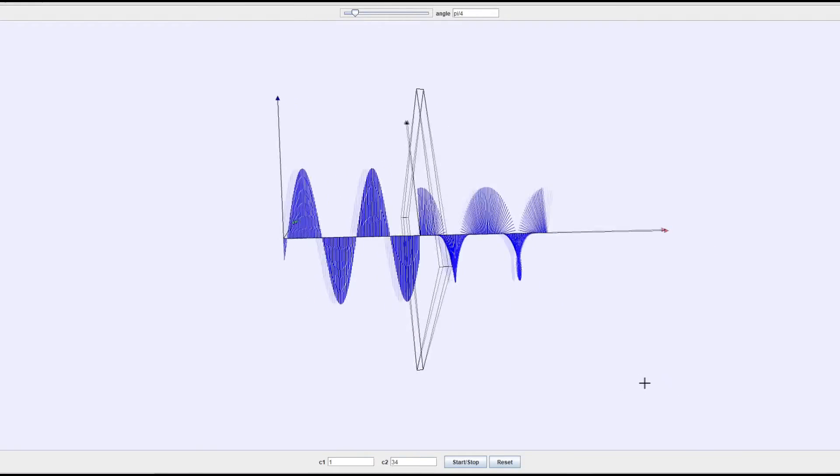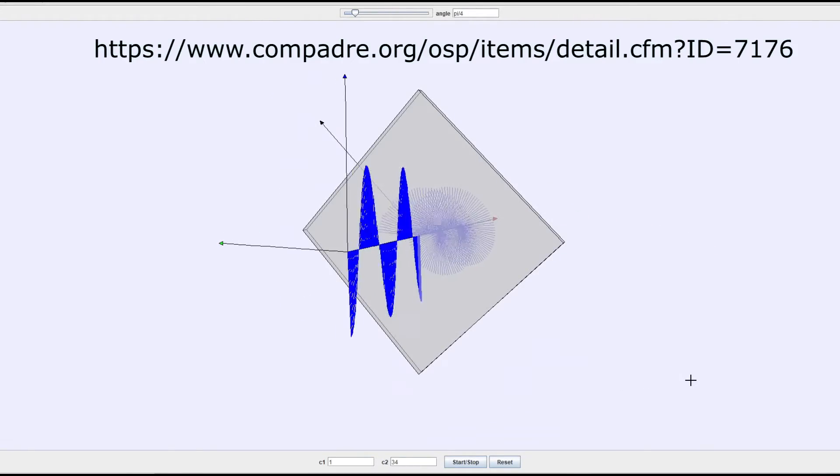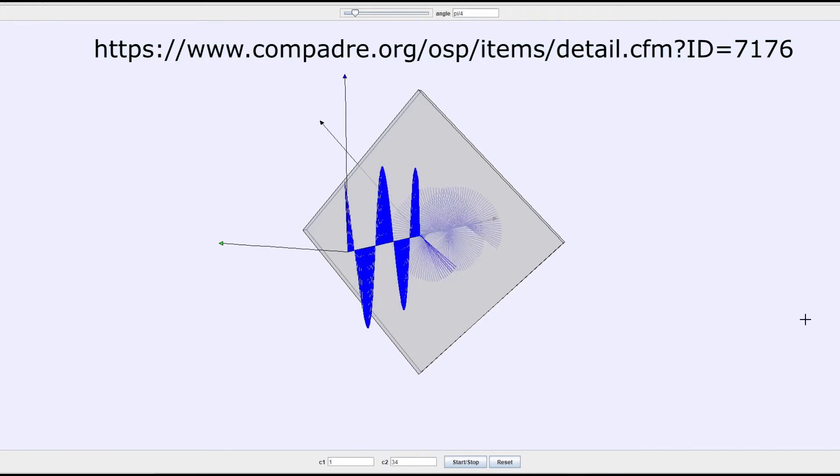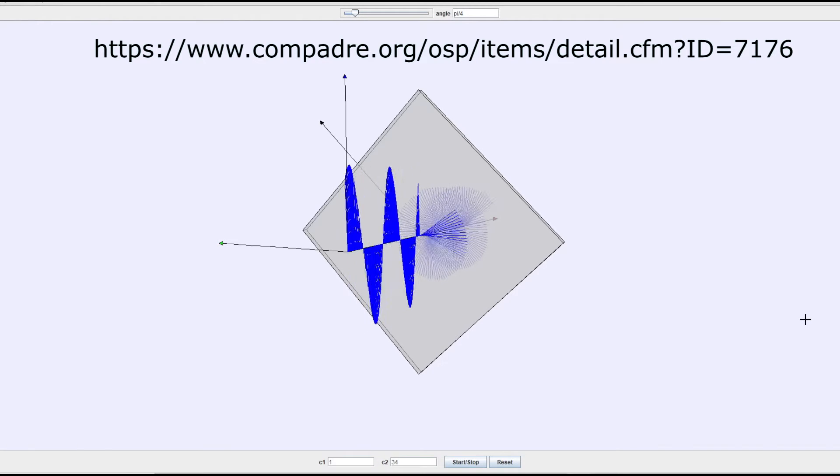Using another simulation, this one from Open Source Physics, the link will be shown right here, we can visualize what happens when light is incident on a quarter wave plate.